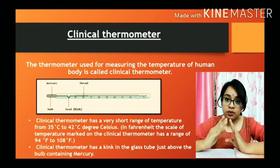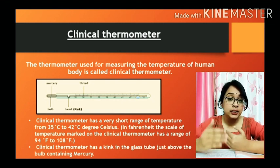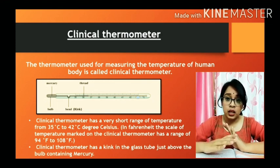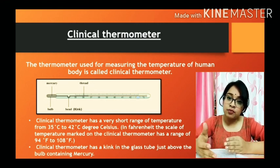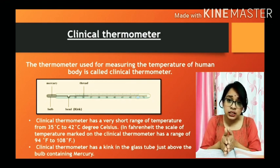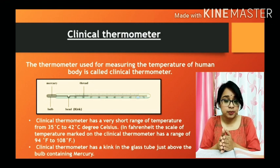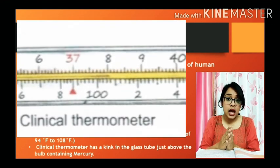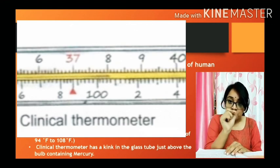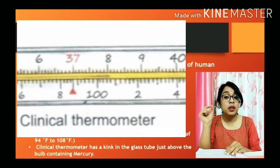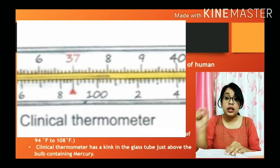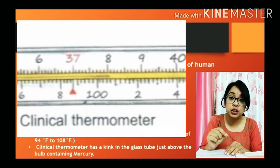One more thing: saying the normal body temperature is 37°C doesn't mean every single person will have exactly 37°C. The human body is a diverse system — each person is different, so you may have a little bit less or a little bit more, but it remains within the range of 37°C. Now, if you look closely at the gradation from 36 to 37, you will see 10 small marks, meaning each small part equals 1/10th of a degree Celsius, that is 0.1°C. So 0.1°C is the accuracy with which you can measure temperature using a clinical thermometer.